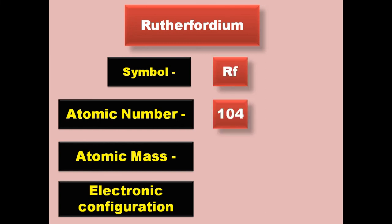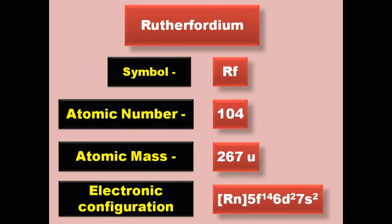Rutherfordium has symbol Rf, atomic number 104, atomic mass 267, electronic configuration [Rn] 5f14 6d2 7s2. Rutherfordium is a transition metal and exists in solid form at room temperature.